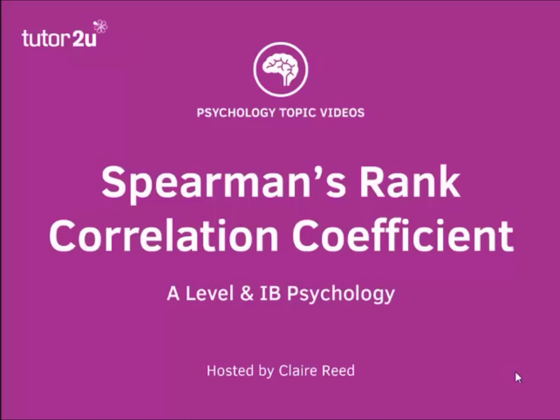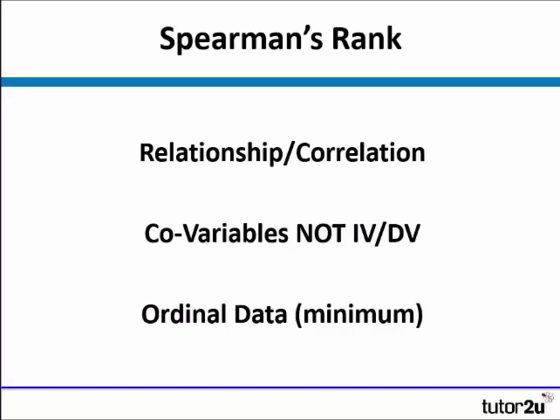This is an A-level and IB psychology video outlining Spearman's rank correlation coefficient. Spearman's rank is a test of relationship or correlation, and because of this it uses co-variables, not an independent and dependent variable. It uses ordinal data as a minimum, but can also use interval or ratio data.